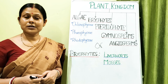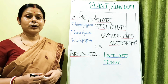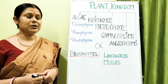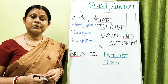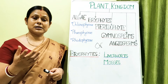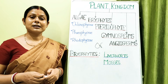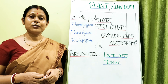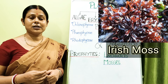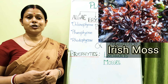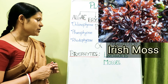Rhodophycean members contain chlorophyll a and chlorophyll d, along with phycoerythrin, which gives them their red color. One of the best examples of a Rhodophycean member is Irish moss.